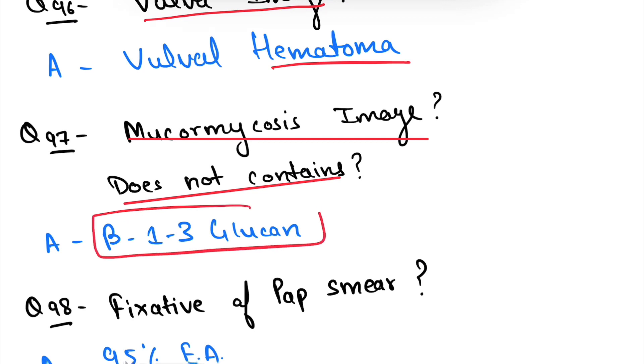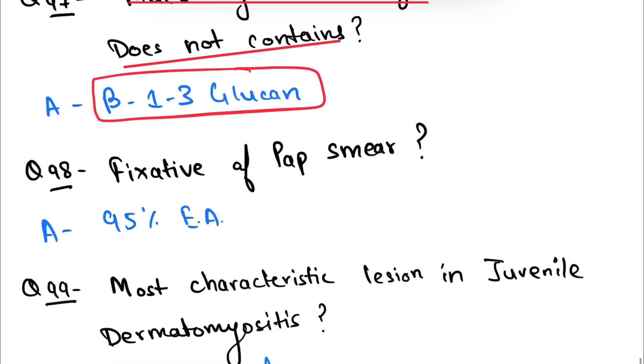not contain beta-1,3-glucan. Question number 98: fixative of Pap smear. Fixative of Pap smear is 95% ethyl alcohol.